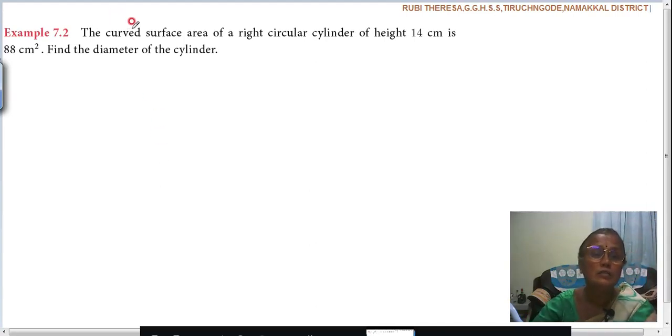The curved surface area of a right circular cylinder of height 14 centimeters is 88 centimeters square. What is the height of the cylinder?